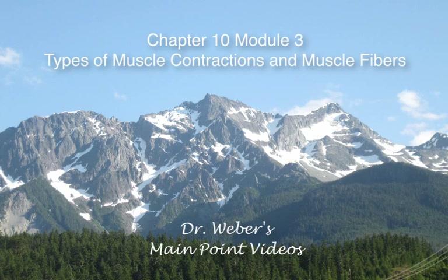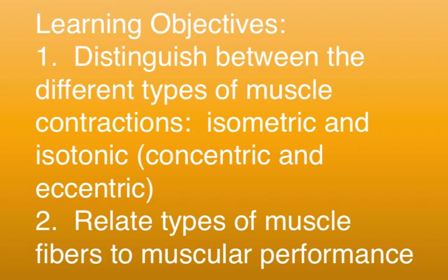This is Chapter 10, Module 3: Types of Muscle Contractions and Types of Muscle Fibers. The learning objectives of this module are: one, distinguish between the different types of muscle contractions — isometric and isotonic, including concentric and eccentric — and two, relate types of muscle fibers to muscular performance.